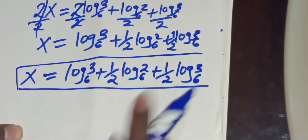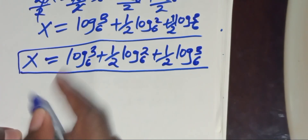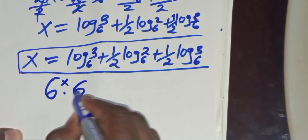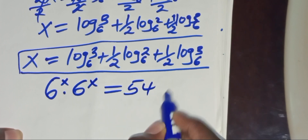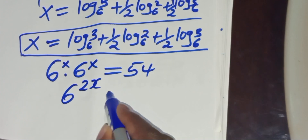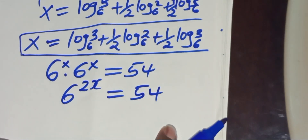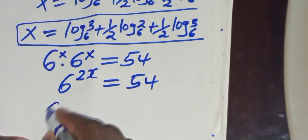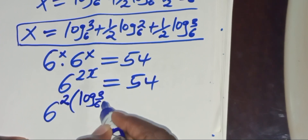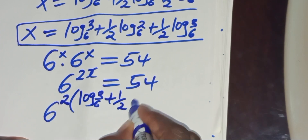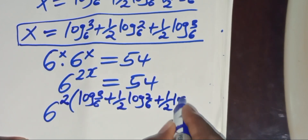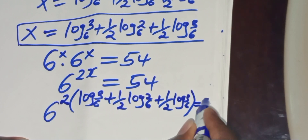Let's check if this value of x actually satisfies the equation. Recall we have 6 to the power x multiplied by 6 to the power x, which should give us 54. We simplify this to 6 to the power 2x, which should give us 54. Substituting the value of x, we have 6 to the power 2 times the quantity log₆(3) plus one-half·log₆(2) plus one-half·log₆(3), and this should equal 54.